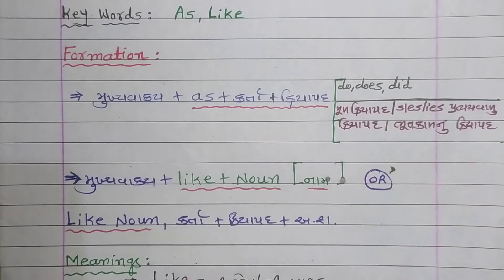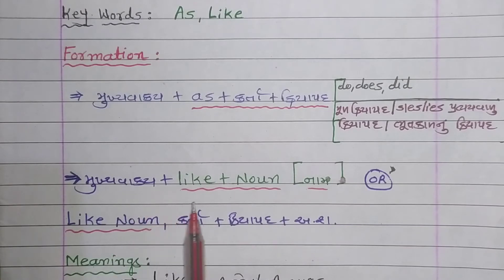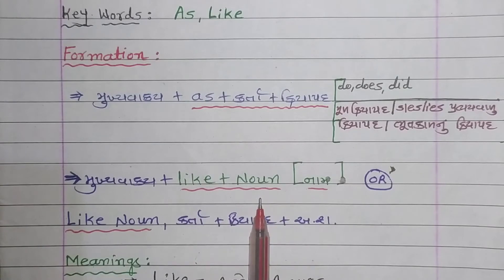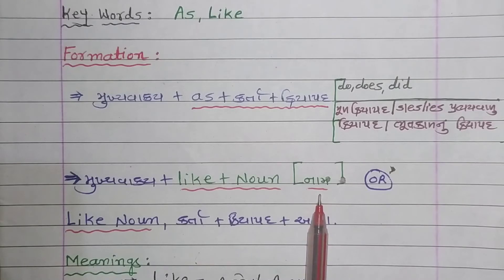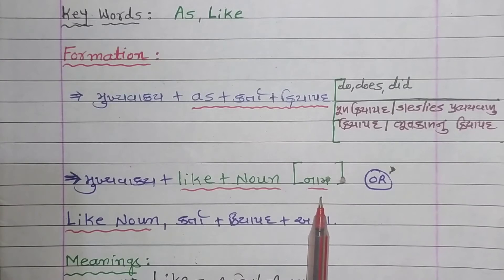હવે આપણે 'like' ની formation જોઈશું. મુખ્ય વાક્ય + like + noun. Noun એટલે નામ. નામ બે પ્રકારે હોય — એક Proper Noun, જેમ કે Ritabin, Jyagruti, Vraj, Sanjeykaka, વગેરે.